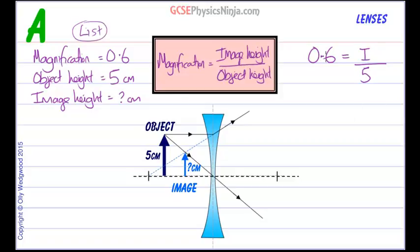We need to rearrange this equation, so let's multiply both sides by 5 to get I as the subject.